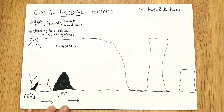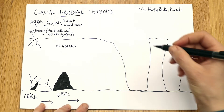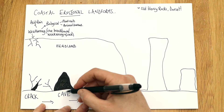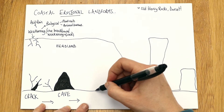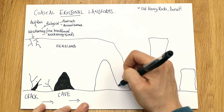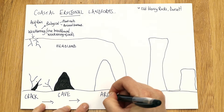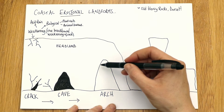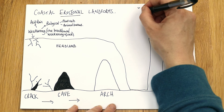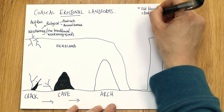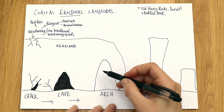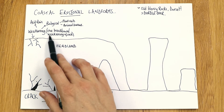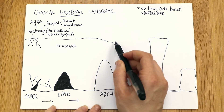We need to get those processes in there — we'll write those in a moment. Once the cave has broken through to the other side, it's not a cave anymore; it turns into an arch. So we draw a big arch and write the word 'arch' — that's stage three. You can see an arch clearly at Durdle Door, which is very close to Old Harry Rocks. Over time, the top of the arch — the roof — gets attacked by weathering processes and eventually collapses.